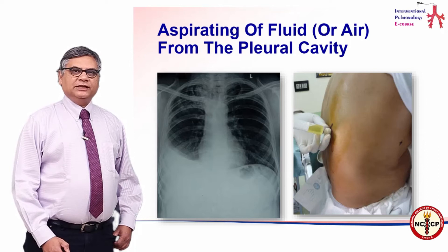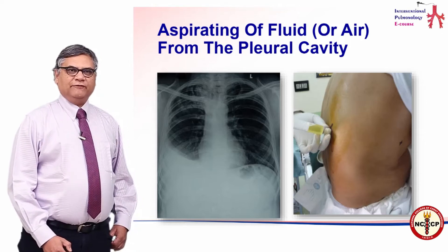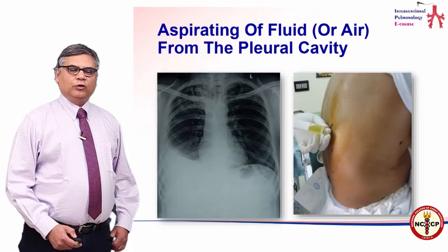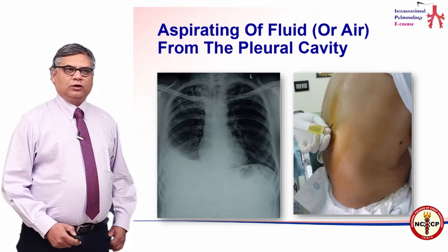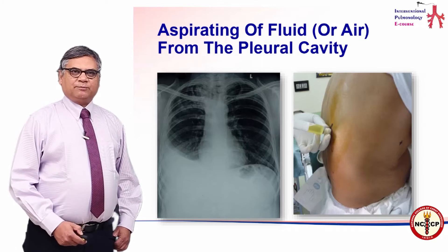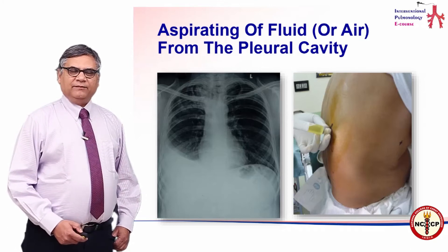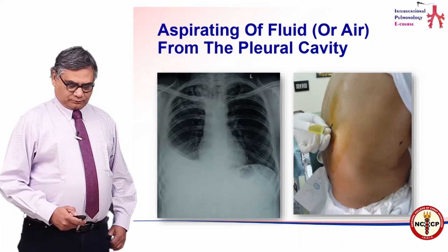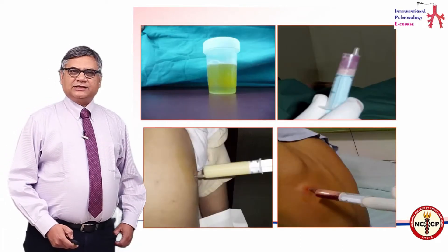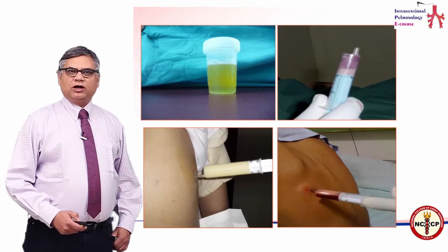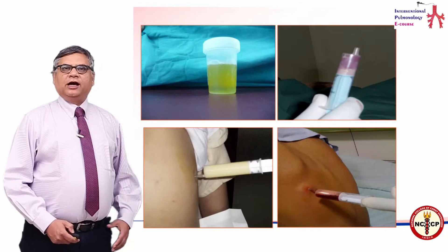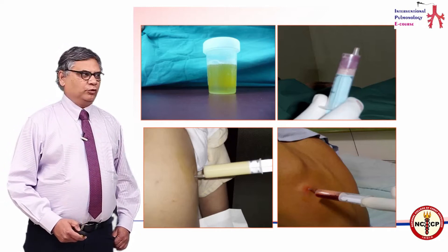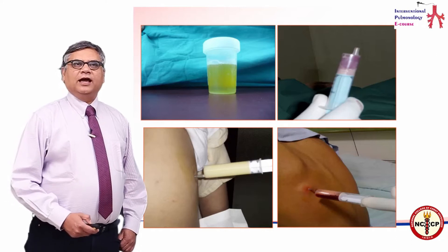All of us must have seen an X-ray of pleural effusion, as you are seeing on the left. On putting a needle into this sort of fluid, we aspirate the contents of the pleural cavity — known as aspiration of pleural fluid — and if there is air, it is termed aspiration of pneumothorax. This is a useful procedure because it gives us answers in a number of pleural diseases: the usual straw-colored fluid of tuberculosis, empyema when we aspirate pus, chylothorax where we aspirate chylous fluid, or hemorrhagic fluid in cases of malignant effusion.